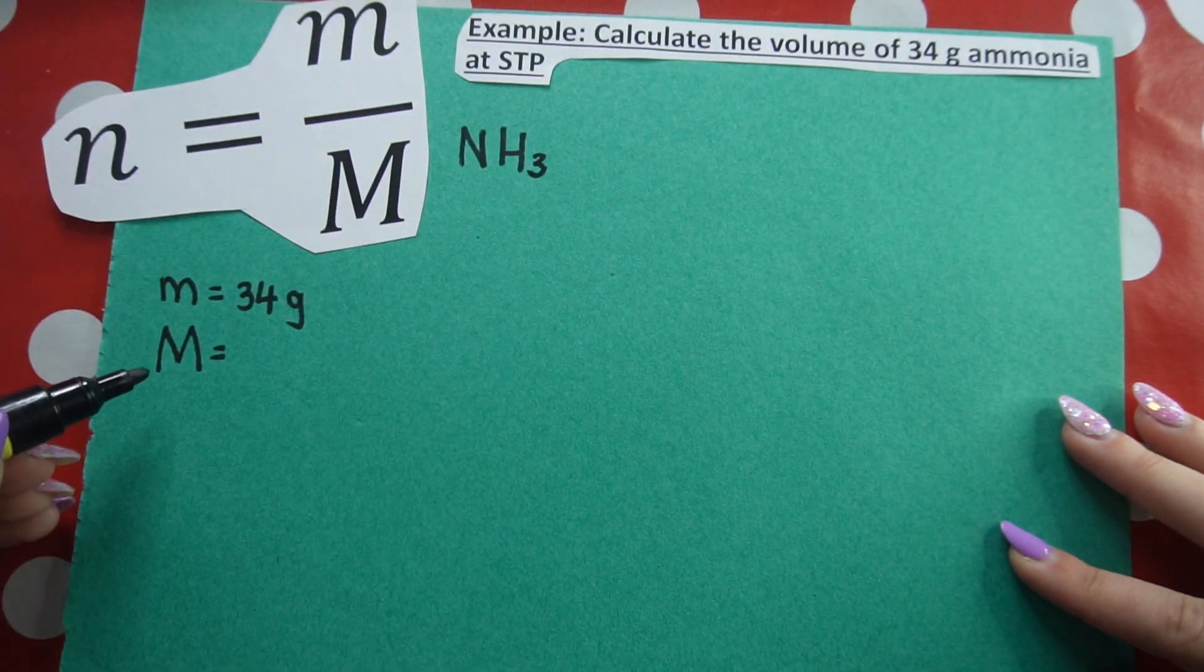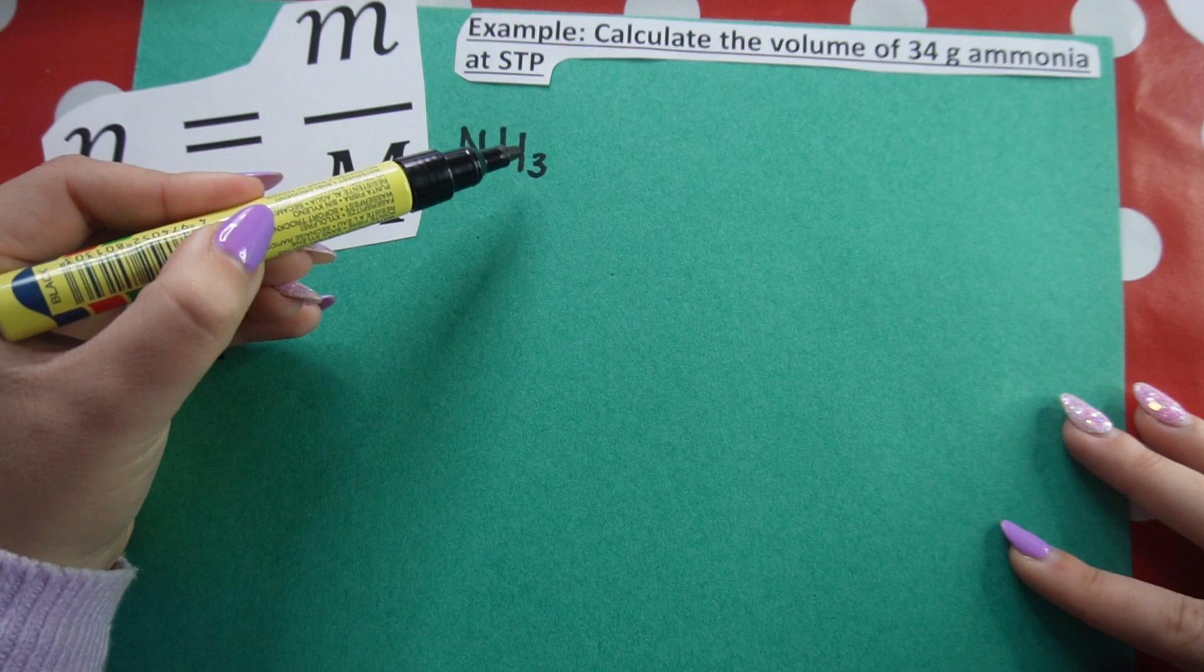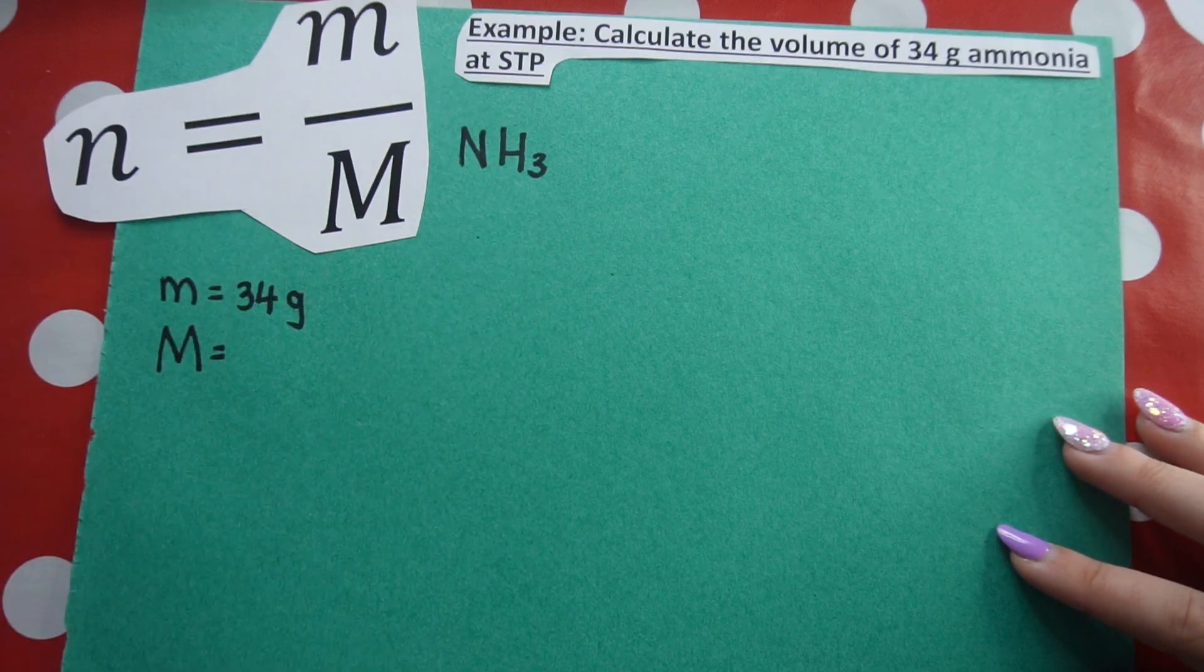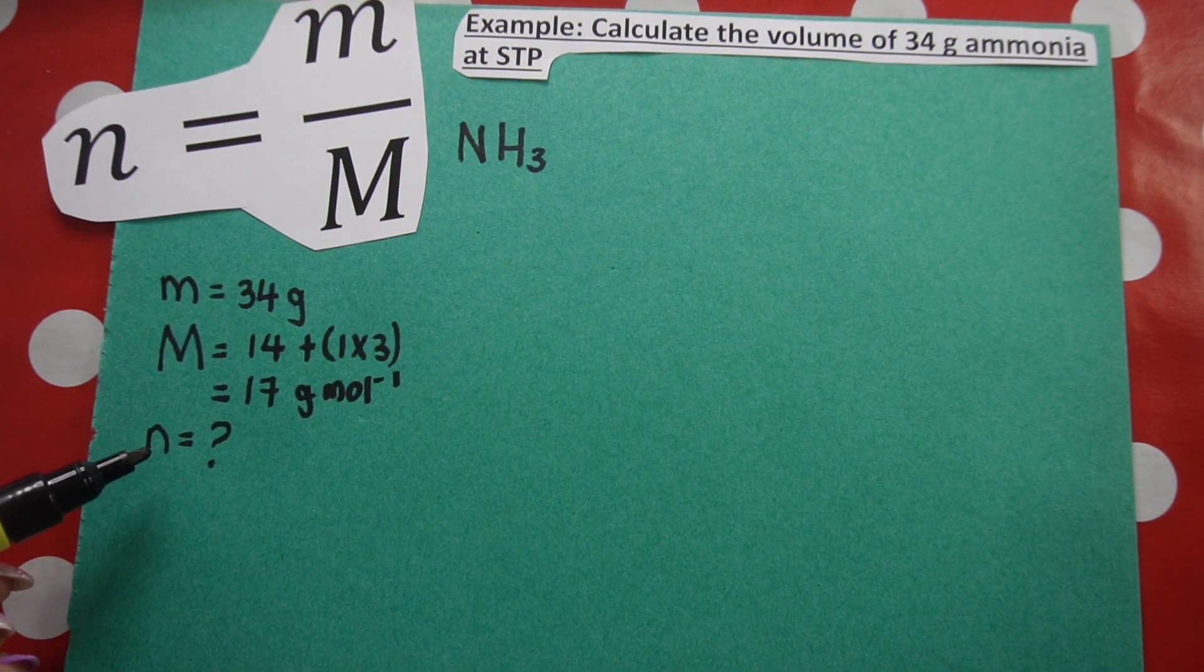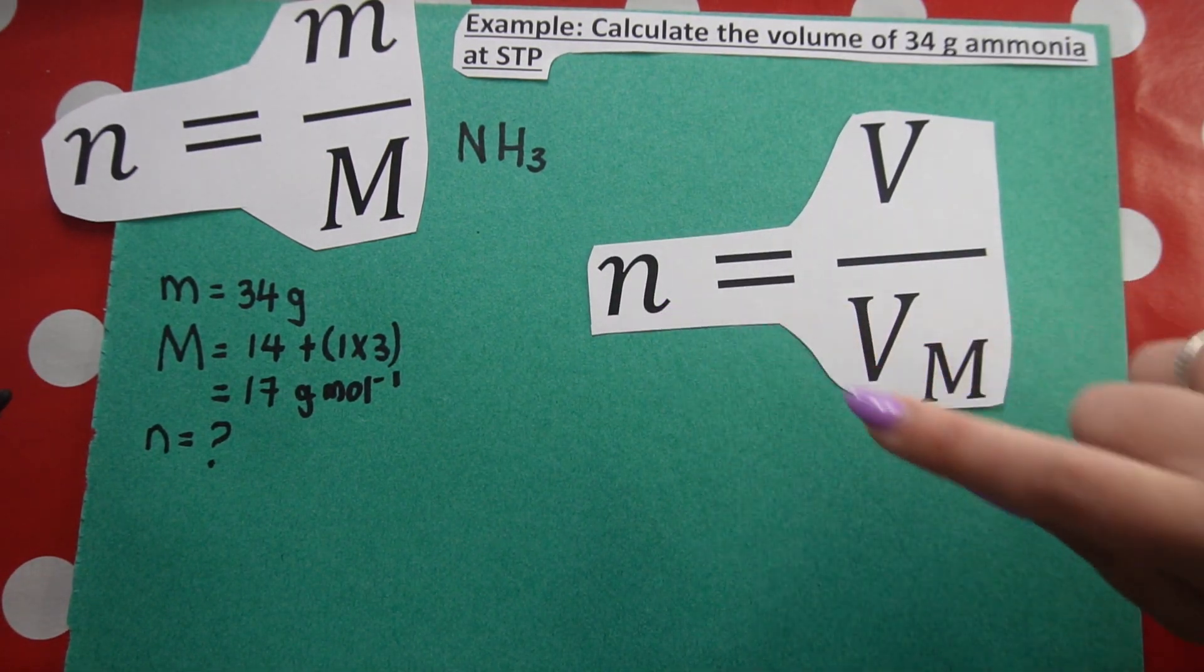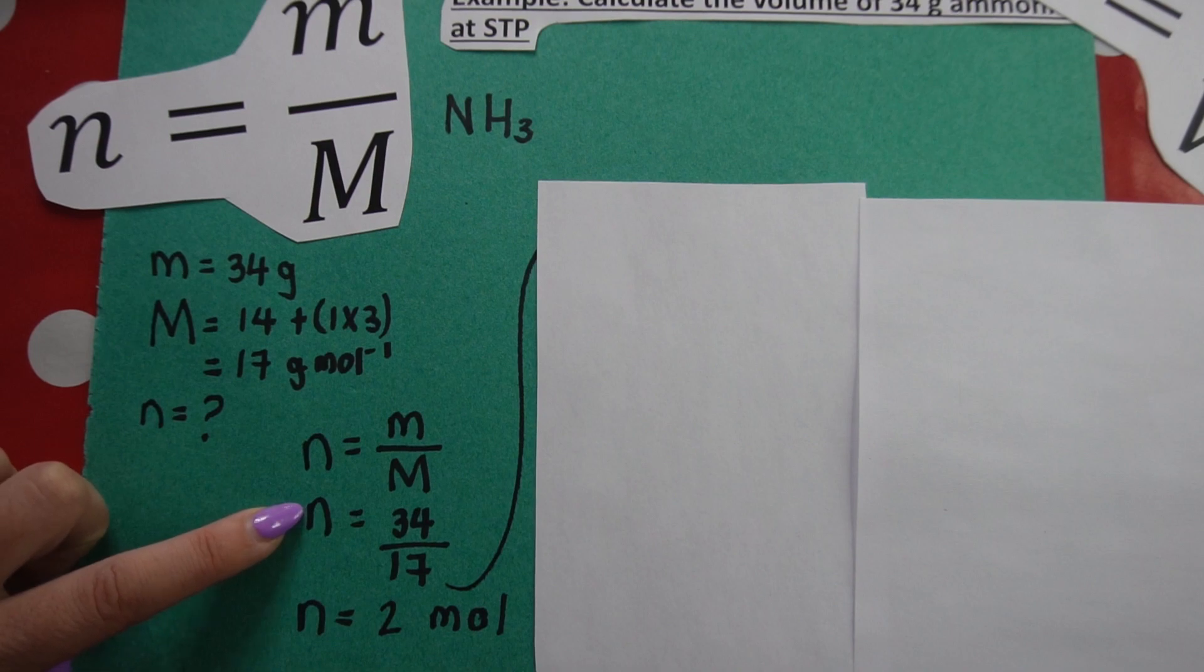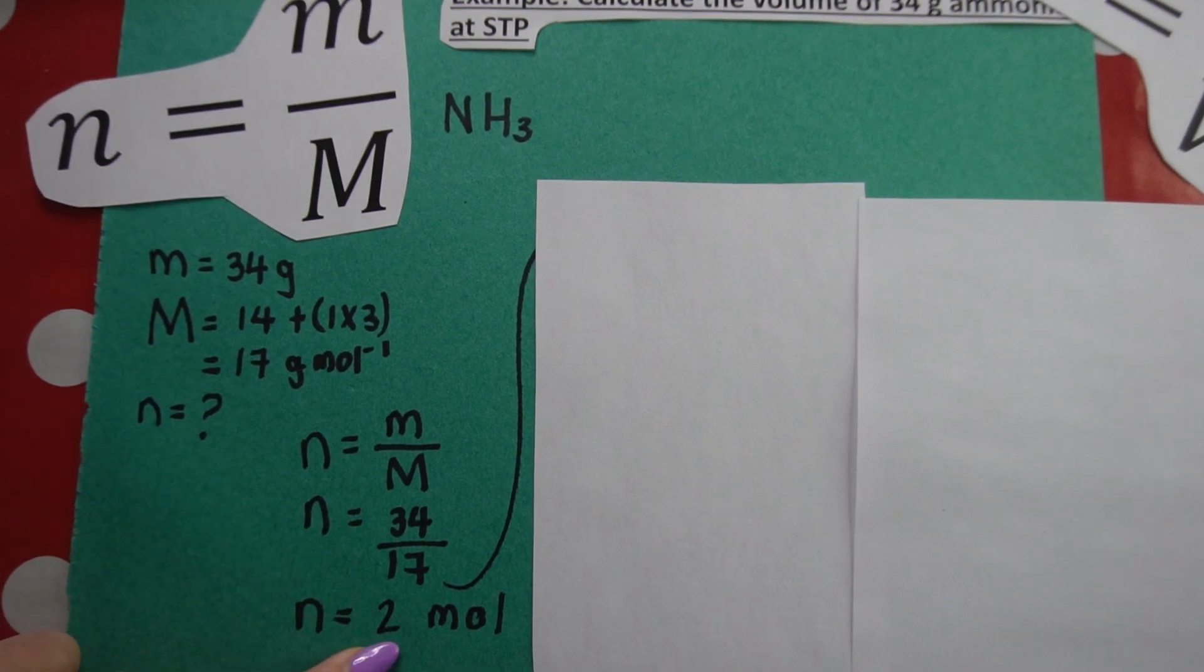NH3. So in order to work out the molar mass, I take the atomic mass of nitrogen plus the atomic mass of hydrogen times three because I have three hydrogens. If you need more help on how to calculate molar mass, click the link in the description. Now remember, we're trying to find number of moles because my goal is to use this formula, which needs moles, to ultimately work out the volume of ammonia. So I wrote down my formula, I substituted in my values. I worked out molar mass by using my periodic table and I got two mole.